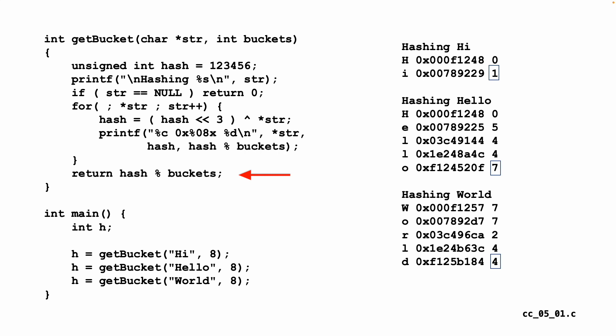So you can see me running different things on the right-hand side and getting back the ultimate final bucket. So 'hi' goes in bucket one, 'hello' goes in bucket seven, and 'world' goes into bucket four.